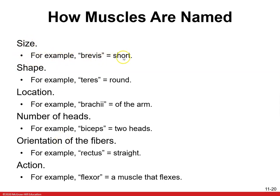How are muscles named? They're named for different reasons — size, shape, location, action. For example, brevis means short, teres means round, brachii means arm. So biceps means two heads and brachii means arm — so biceps brachii is found in the arm. Rectus means straight. And then you have action-based names like flexor — so flexor carpi ulnaris flexes the hand on the ulnar side.